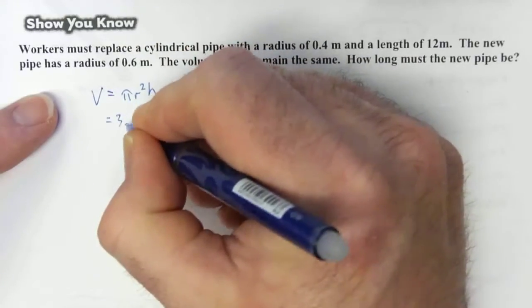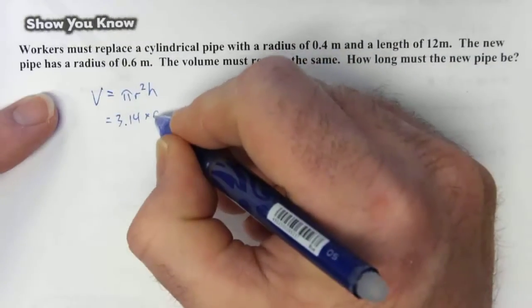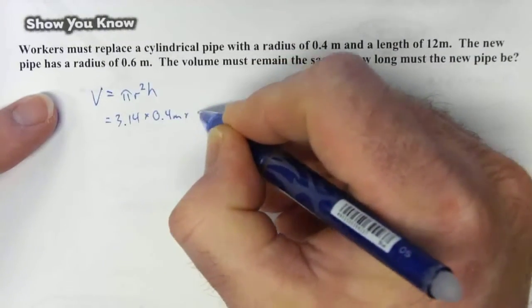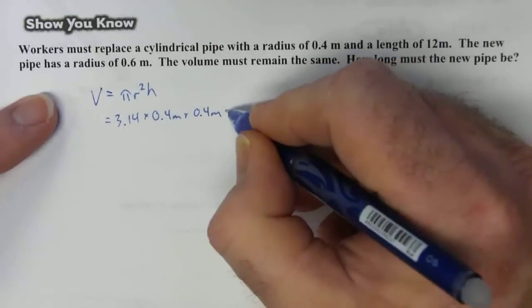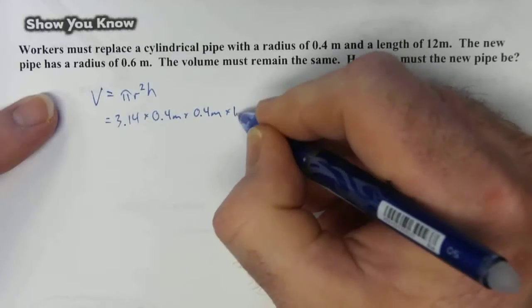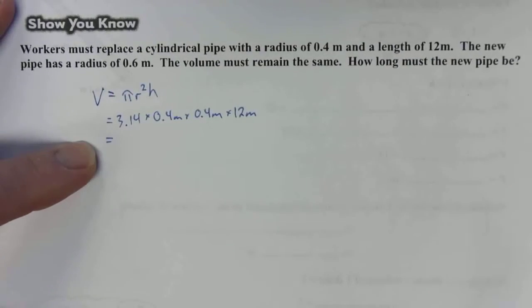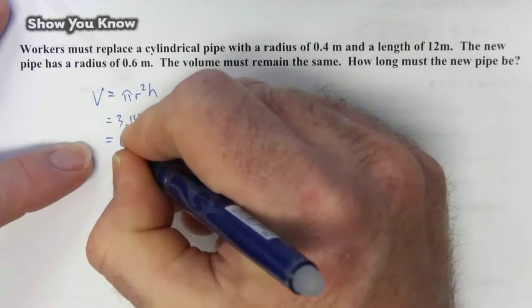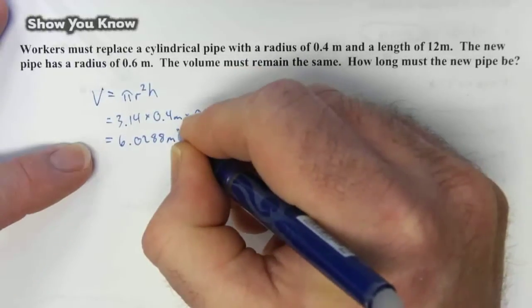So for the original pipe that's 3.14 times the original pipe's radius of 0.4 meters. So times 0.4 times 0.4 times the height of 12 meters. This will give us the volume of the original pipe, which is 6.0288 meters cubed.